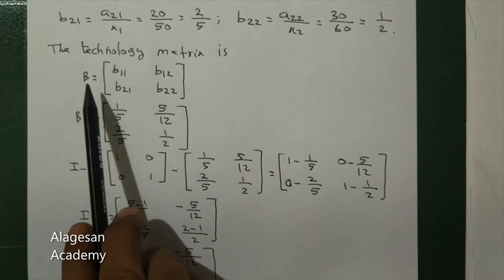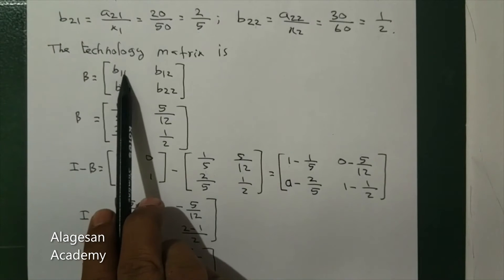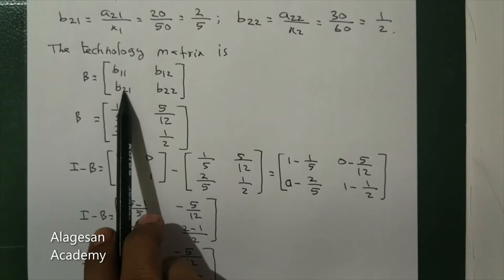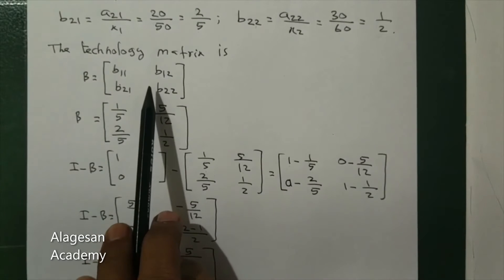Next we have to write the technology matrix B equal to b11, b12, b21, b22. The values are 1/5, 5/12, 2/5, 1/2.